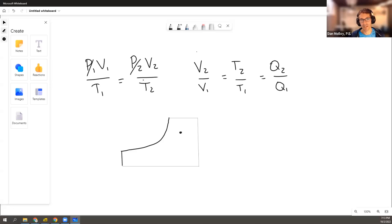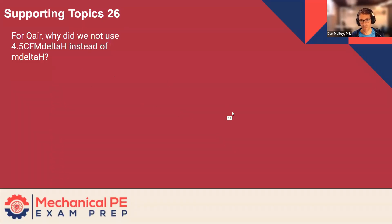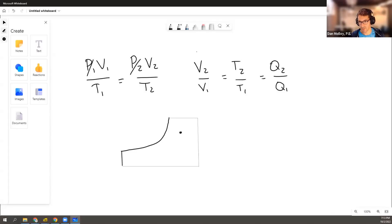And the question is, well, when will you not get away with using the rule of thumb? And the rule of thumb here is 4.5 CFM delta H. Q dot equals 4.5 CFM delta H.